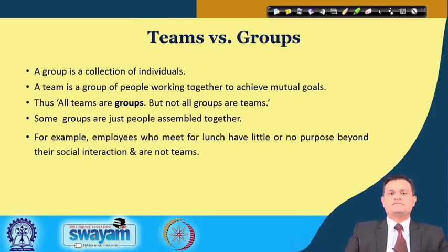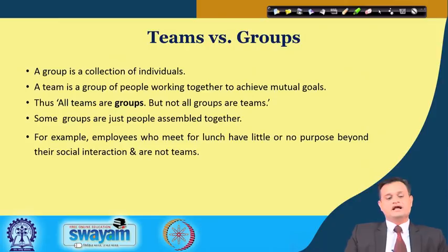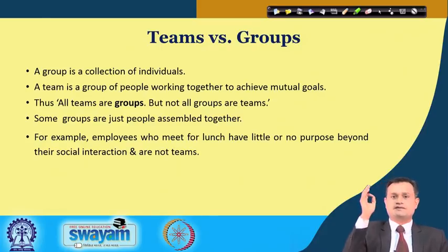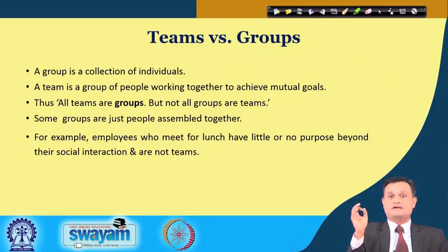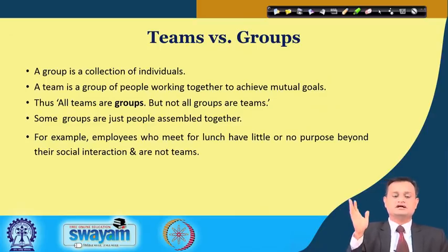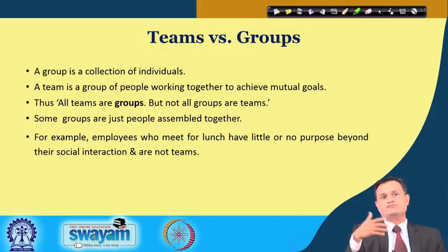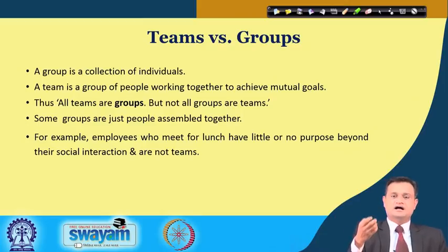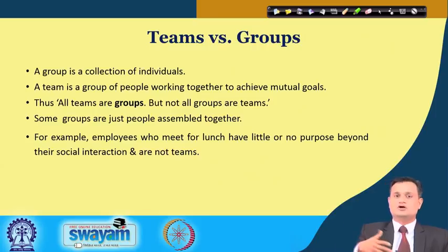There is a clear distinction between team and group. A group is a collection of individuals — walking around a campus with friends is a group. When you say team, it has a specific purpose; they are committed to that purpose with specific, multiple skills in the team. A team is a group of people working together to achieve a mutual goal. Just a collection of people without purpose is a group.